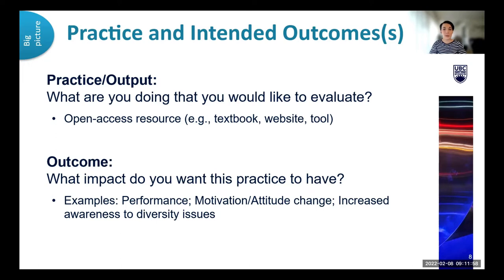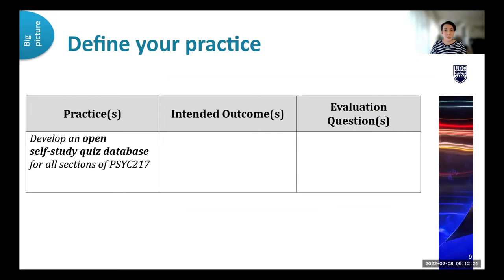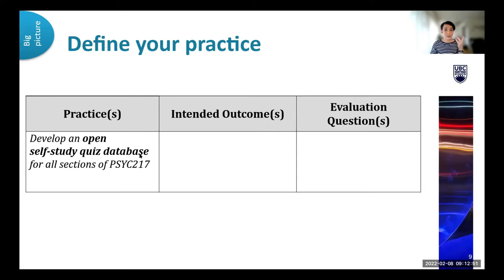When thinking about outcome, we think about that as what impact you want the practice to have. Some examples are things like performance, a motivation or attitude change, increased awareness of different diversity issues, and the list goes on. Working through an example: if I was given some OER fund resources, I'm looking at developing an open self-study quiz database for all sections of Psych 217, which is a research methods course that loads of students take. So that's the practice — the resource I'm creating. And then the intended outcome: my goal is to increase student learning and knowledge as a result of these resources. It's really important to lay out these two pieces clearly before you build your evaluation question.